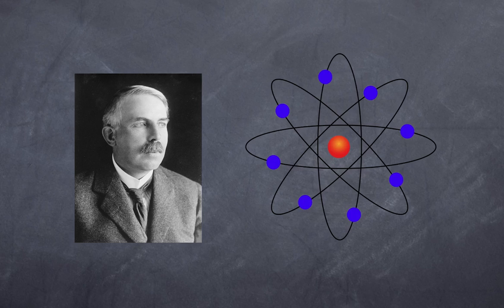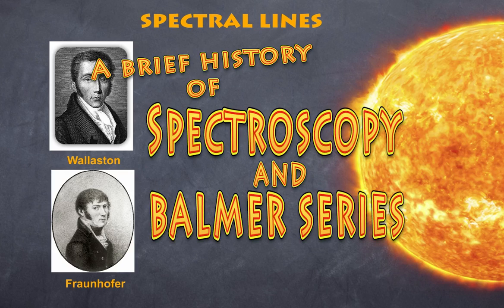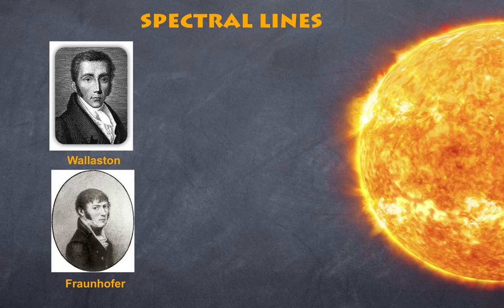But before we look to Niels Bohr, we need to also have a little bit of history of the understanding of spectral lines. And why we need to discuss this is because it is instrumental in helping Niels Bohr in devising a model that corrects Rutherford's planetary model. So let's briefly talk about spectral lines.